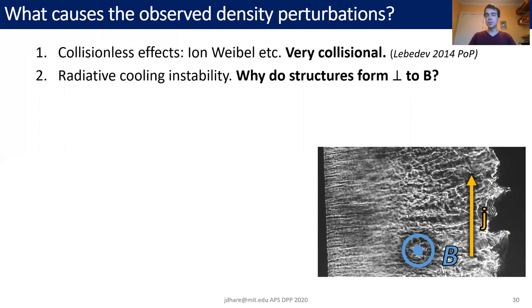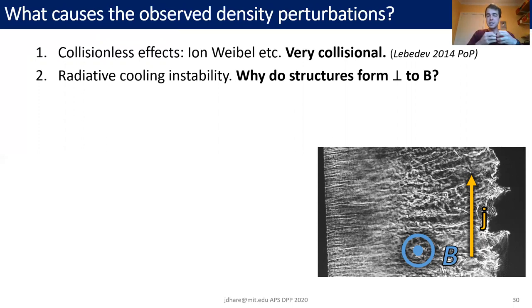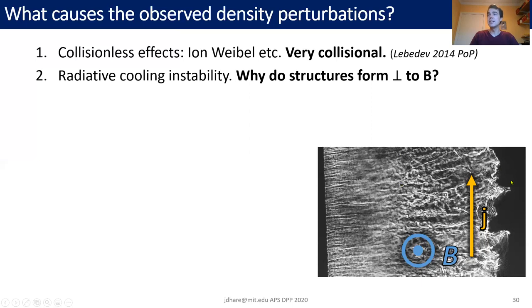Another possibility is a radiative cooling instability, where a region of plasma becomes colder due to fluctuations, gets compressed by the surrounding plasma, radiates away more energy, and the compression continues — a runaway instability which causes dense regions to form. However, there's no good reason why these dense regions should be perpendicular to the magnetic field, and we do see a lot of structure in the horizontal direction. So it's not clear why the radiative cooling instability would cause this sort of structure.